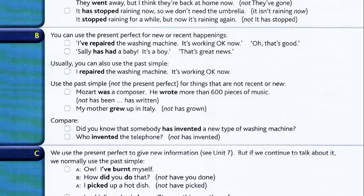We do not use present perfect for things that are not recent or new. Mozart was a composer — he wrote more than 600 pieces of music. He was a composer and he wrote in the past — it all happened in the past. My mother grew up in Italy.